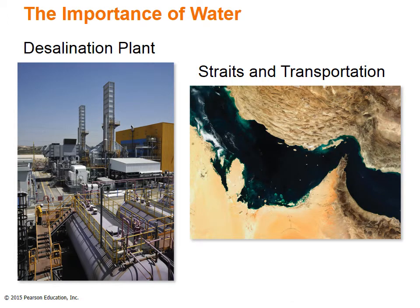A desalination plant in Israel, located south of Tel Aviv, produces about 13% of Israel's domestic fresh water and is one of the largest desalination plants in the world. The Straits of Hormuz — the entrance to the Persian Gulf — is one of the region's most important choke points, vulnerable to military blockades or disruption.